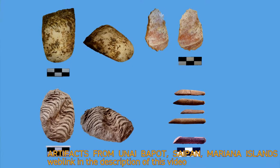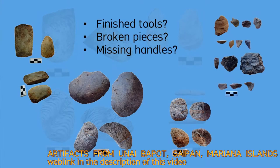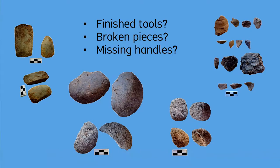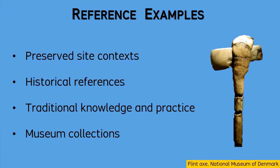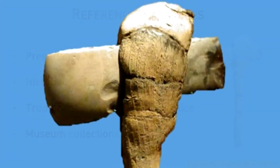After assessing the raw materials of stone artifacts, you still may need more information to ascertain how the objects once had related to complete tools. In this regard, reference examples can be informative, for instance seen in well-preserved sites, in historical records, in traditional knowledge and practice, and in museum collections.